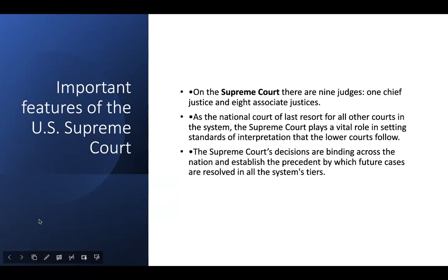An example would be the Dobbs case, which is the case that overturned Roe v. Wade. That doesn't mean they can't potentially overturn Dobbs — it just means there needs to be another situation where an abortion law is at issue and works its way up to the appellate court again.